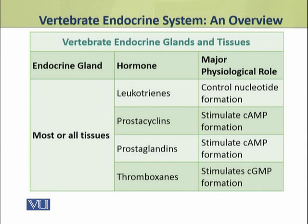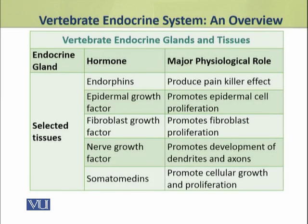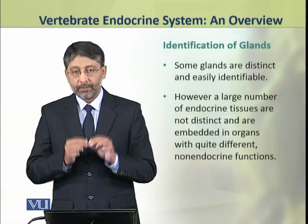Dear students, some hormones and hormone-like substances are produced by most or all tissues of the body. These include leukotrienes, prostacyclins, prostaglandins, and thromboxanes. These control various nucleotide formations, cyclic AMP, and cyclic GMP. The hormones which are produced by more than one selected type of tissue include endorphins, epidermal growth factor, fibroblast growth factor, nerve growth factor, and somatomedins.